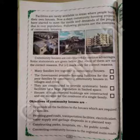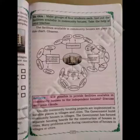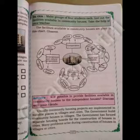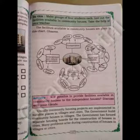Now, do this activity, children. Make a group of four students each and list out the facilities available in community houses. Take the help of your teacher. The facilities available in community houses are given in this chart.